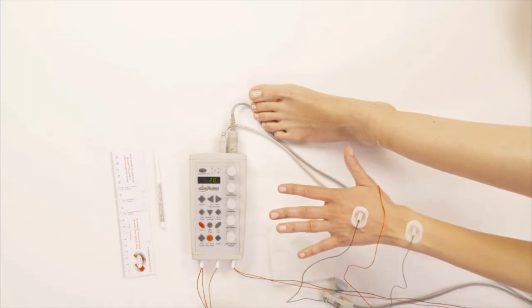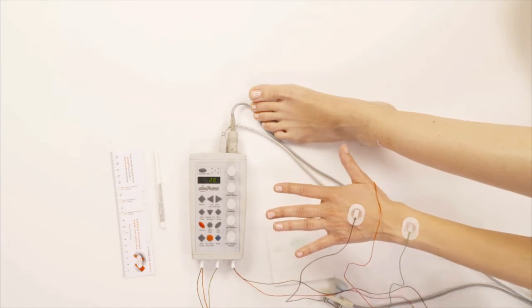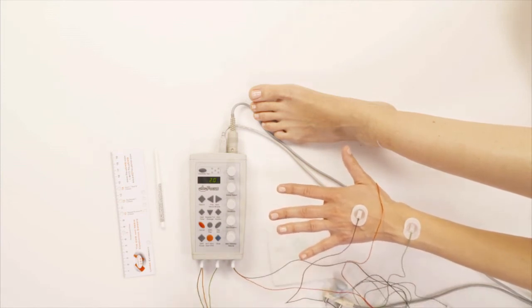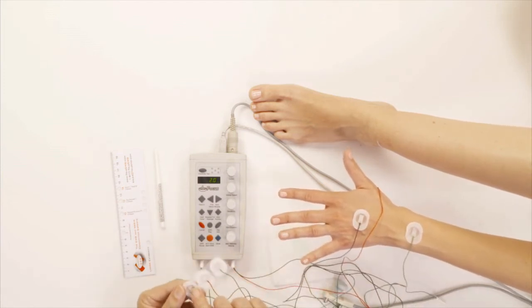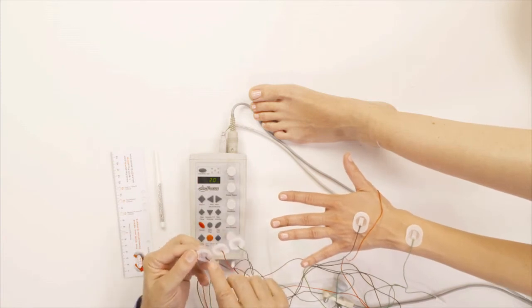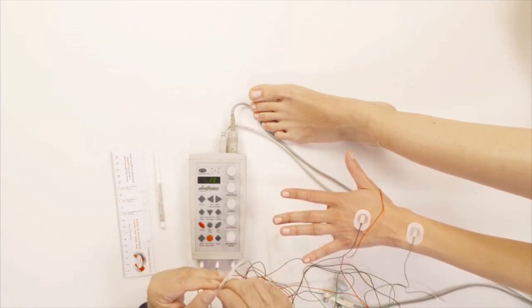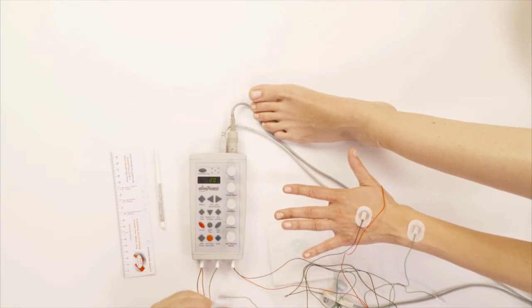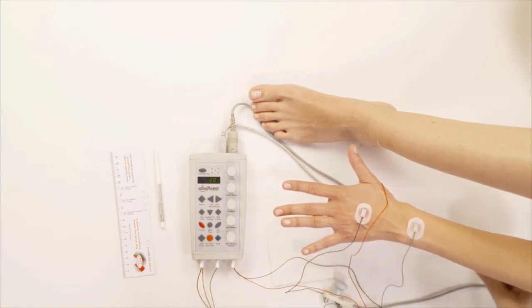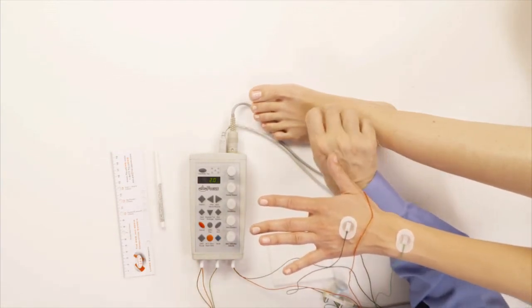So for the leg, for the foot that is, we're going to put only the black active electrode and the red reference electrode. And the black, again, is going to go over the back of the foot like so.